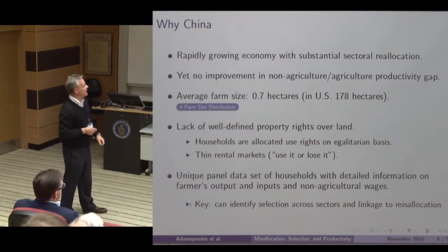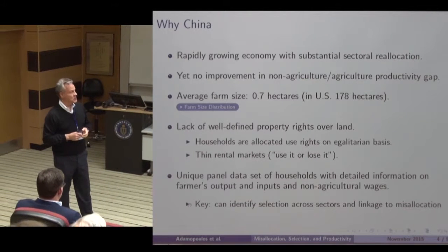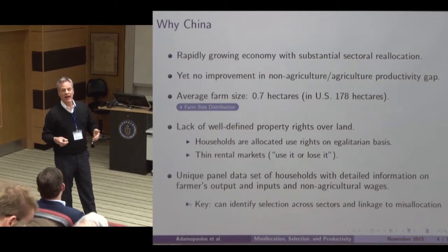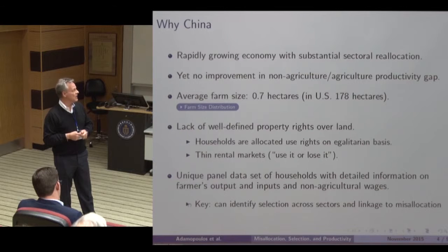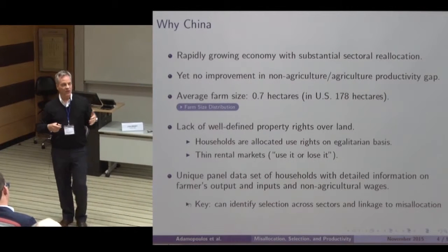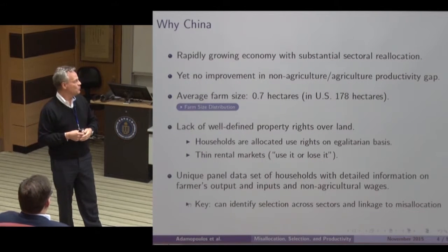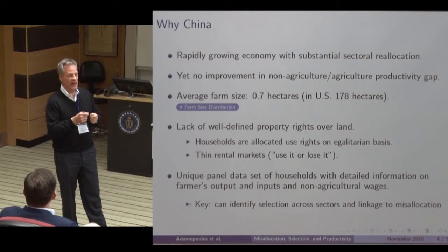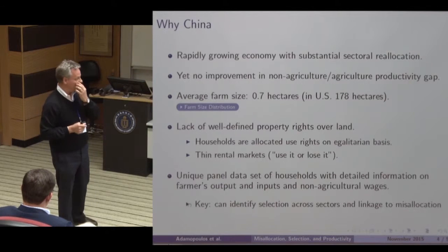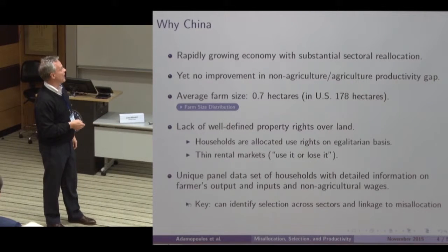Why are we going to take a look at China? We're going to take advantage of a unique panel dataset of households that has been collected since the mid to late 1980s by the Research Center for Rural Economy. It's going to provide us very detailed information on the farmers' outputs and inputs as well as on their non-agricultural wages. What these data allow us to do — given that we have very good information on inputs and outputs for these households for what they're doing in agriculture and what they're doing in non-agriculture — is to take a look and try to identify this selection across sectors, and the choices these households are making between agriculture and non-agriculture, and try to link it to the misallocation we observe.